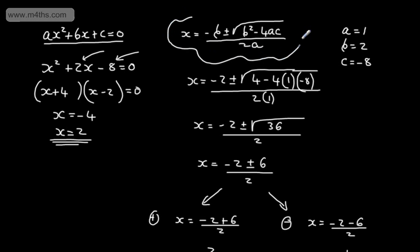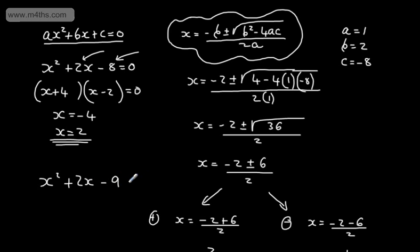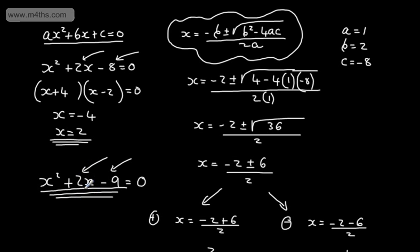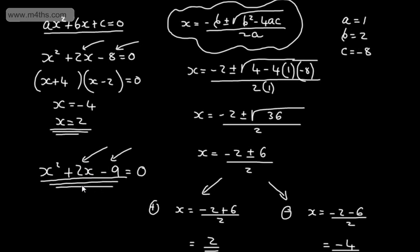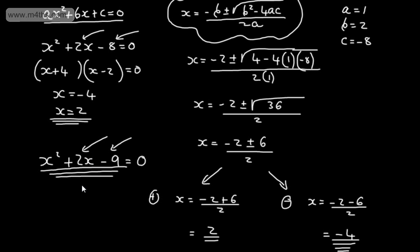The only reason we would use the quadratic formula is if we couldn't factor it. For example, if we had x squared plus 2x minus 9 equals 0, we don't have two numbers that multiply to give negative 9 but also add to give 2. It's kind of like opening a door versus kicking it in — if you can open the door, just open it; if you need to kick it in, go ahead.